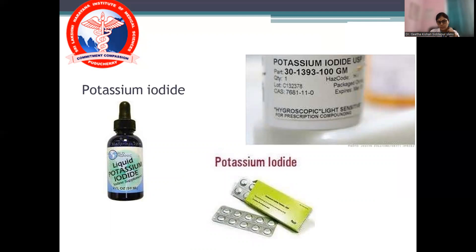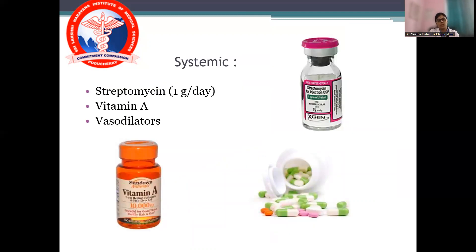Potassium iodide in tablet or nasal drop form has also been tried. For systemic treatment, a broad-spectrum antibiotic like streptomycin 1 gram per day intramuscularly weekly can be given. Vitamin A helps in healing, and vasodilators can also be used. Treatment options depend on severity, age, general condition of the patient, and comorbidities — because streptomycin itself is nephrotoxic and ototoxic, so monitoring is required. Treatment should be individualized for each patient.